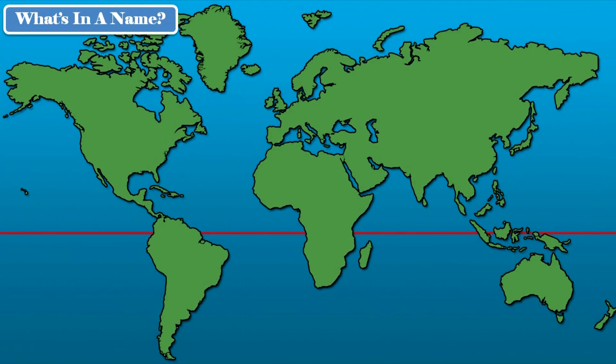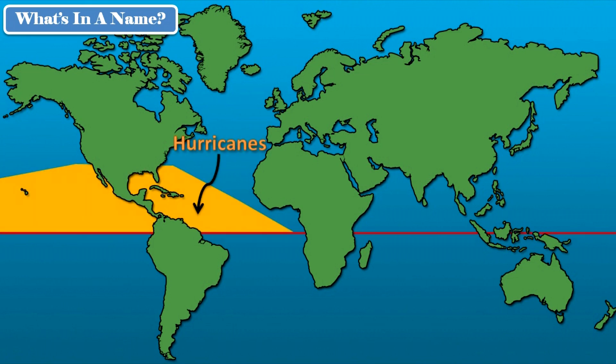Liam and my dogs asked: how do typhoons form? Well, the first thing you should know is that hurricanes, typhoons, and cyclones are all the same thing. Americans call them hurricanes because the storms that affect our part of the world form in the Atlantic and Eastern Pacific Oceans. Now, if a similar storm forms above the equator in the Western Pacific, it's called a typhoon.